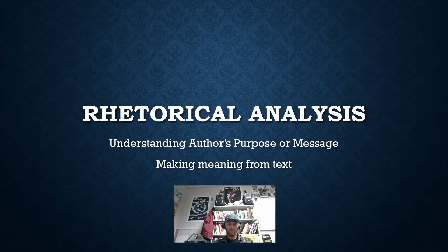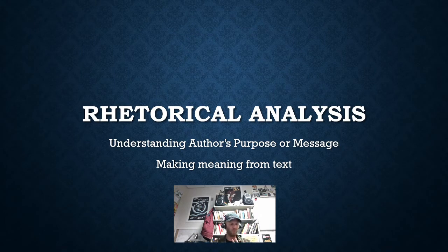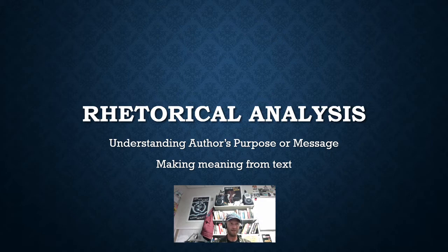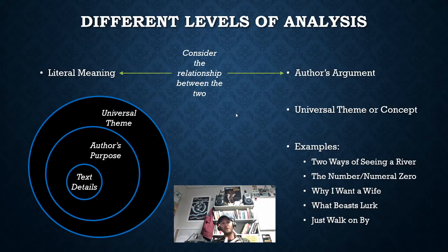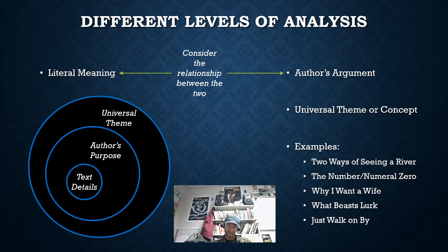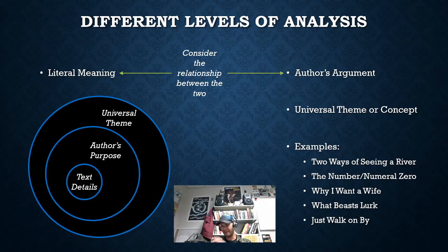What we need to work on practicing and reviewing is the different levels of how our brain thinks and the different levels for the way our brains focus on what we're trying to analyze. The big thing to keep in mind is that there is a difference between what the author is actually saying, the words they're using, and then the bigger argument and the bigger purpose that they have.